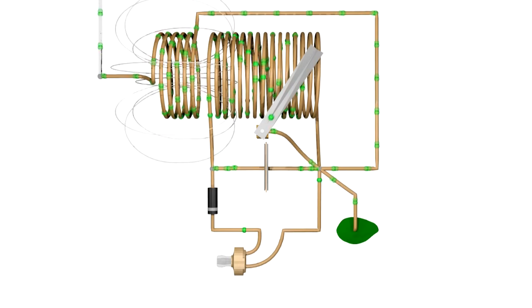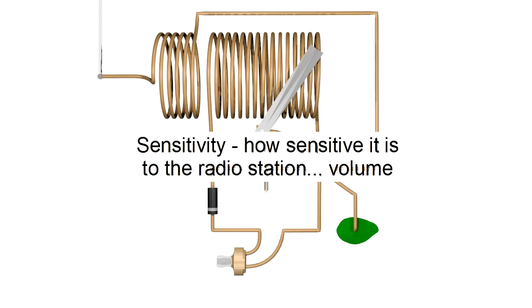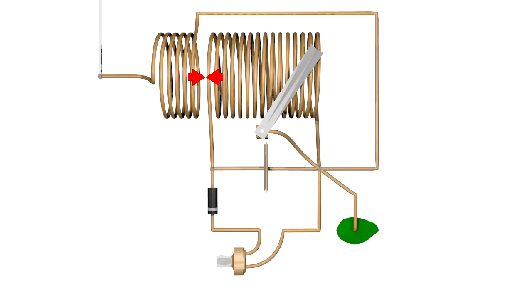However, there is a trade-off. Because we have to transfer energy from electron movement in this antenna coil, to this magnetic field, and then to the electrons in this tuning coil, the energy transfer isn't 100%, and so we lose some volume. This is called the radio sensitivity, or how sensitive it is to the radio station we want to hear. The solution is to bring the coils closer together to reduce the energy loss. But doing that allows all the other radio stations to interfere more.